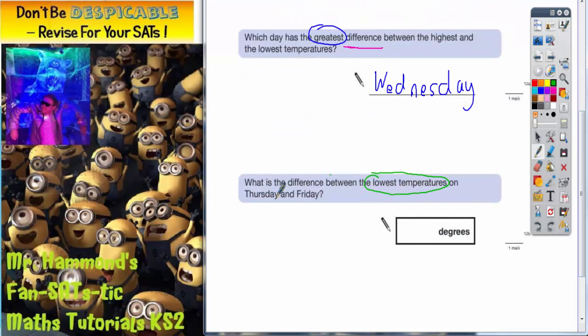So Thursday is positive one and Friday is negative five, and we need the difference for these. The same technique as before will work because we've got a positive number and a negative number. Pop zero in the middle. The gap from negative five to zero is just five, and the gap from zero to one is just one.